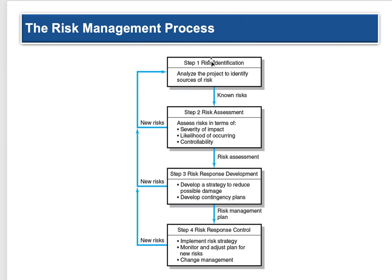The risk management process: step one — identify the risk. Step two — assess the risks in terms of severity of potential impact, likelihood of occurring, and controllability, then make a risk assessment. Step three — risk response development: develop a strategy to reduce possible damage and develop contingency plans. Step four — response control: implement the risk strategy and monitor and adjust the plan for new risks and changes in management. New risks are going to emerge all along the way and you have to go back to step one: risk identification.